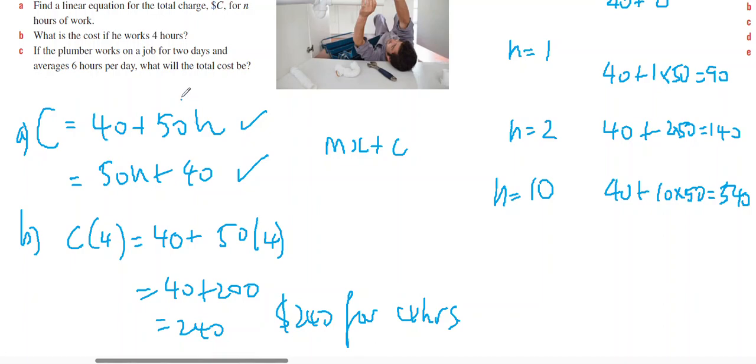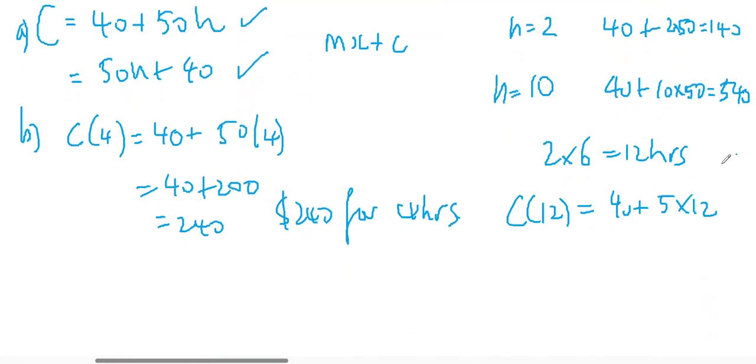And if the plumber worked on a job for two days and averages six hours per day, what will be the total cost? So two days will be 2 times 6, or 12 hours. So the cost for 12 hours will be 40 plus 50 times 12. 50 times 12 will be 600. The answer is $640.